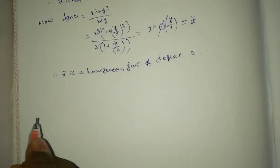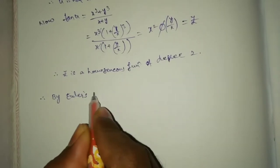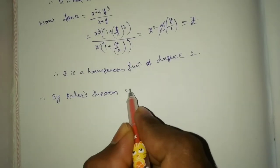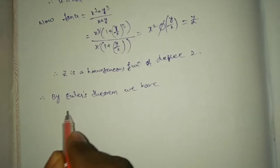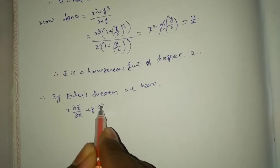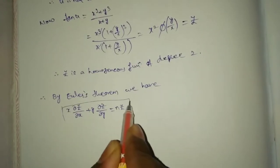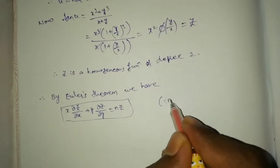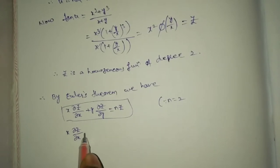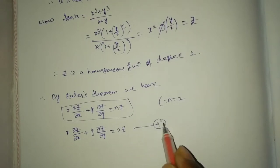Therefore by Euler's theorem, we have x del z by del x plus y del z by del y equal 2z. This is equation number 1.